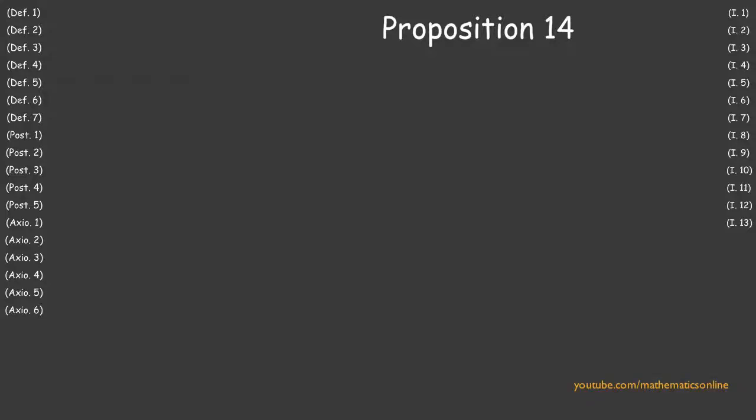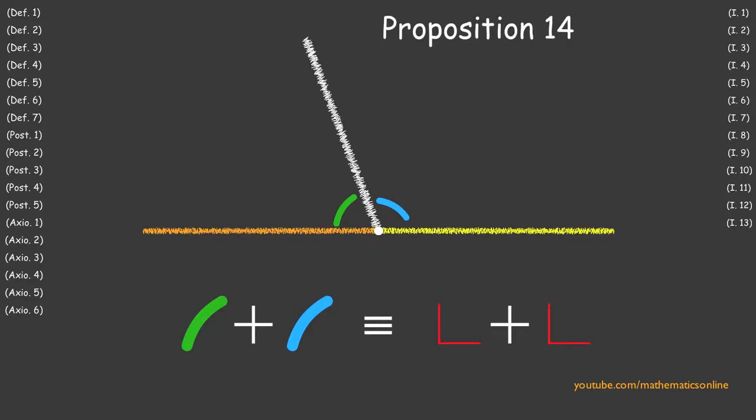In Proposition 14, we prove that if a straight line has two lines drawn outward from the same endpoint, making the adjacent angles congruent to the sum of two right angles, then the two lines must be in a straight line with each other.